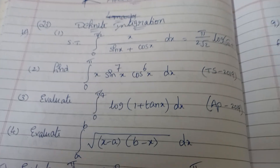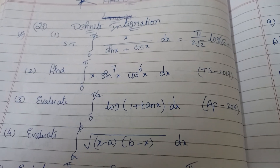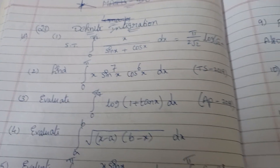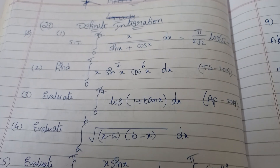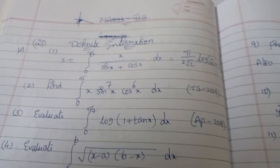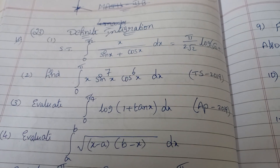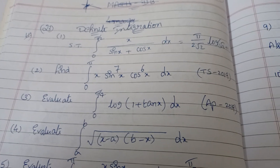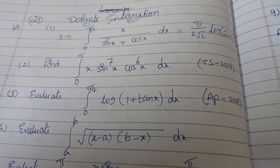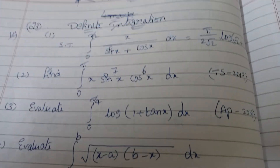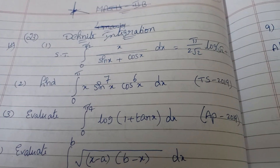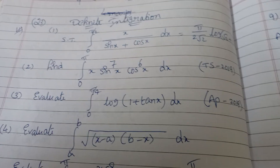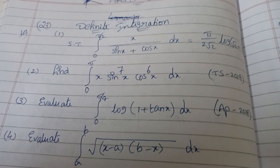These are the 2B important questions. First, prepare all the basics — that is very important. Then prepare for the exam. You can prepare all two-mark questions from all chapters. Circles, system of circles, integration, and definite integration are the most important chapters. Prepare all questions from the academy textbook examples. If you prepare these questions, you will definitely get 75 out of 75. All the best, bye!